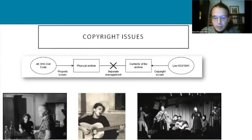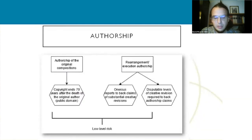Bueno's materials include voices of several subjects who may claim copyright — the original singers, Bueno's informants, authors of rearrangements, Caterina Bueno herself, and the performers of her band. Concerning authors of original compositions, traditional folk songs can be safely assumed to be in the public domain — 70 years having passed since the death of the author. Execution or rearrangement authorship should be regarded as a minor cost as well, since Italian law requires substantial levels of creative vision to claim such rights, and the vague definition promotes disputability; onerous reports are needed to substantiate such claims.